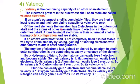If an atom's outermost shell is not completely filled, it is not stable and will try to attain stability. It will attain stability by losing electrons, gaining electrons, or sharing electrons with other atoms to attain octet configuration.